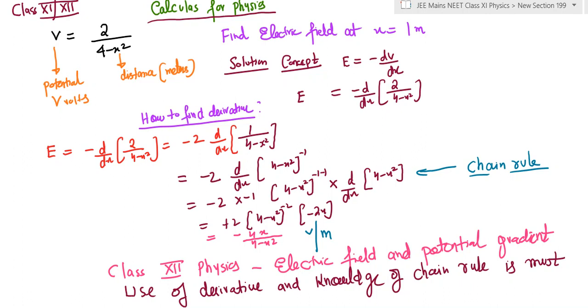You can see I have applied chain rule to calculate the electric field function and it has come out to be -4x/(4-x²). In fact, I'll just correct it, this is whole square, so let me just put it as whole square.